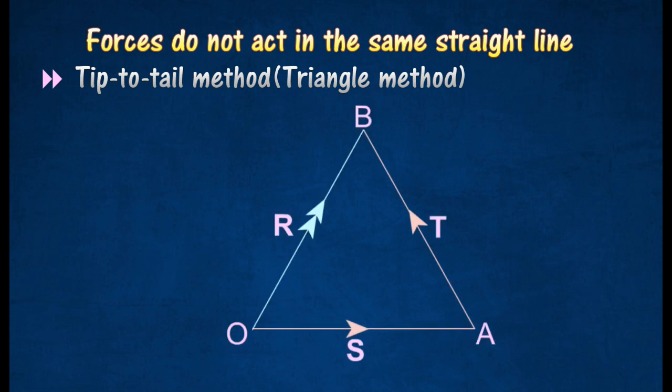The resultant is then represented by a line from the tail of the first force to the tip of the second force. In the figure shown, the resultant of the forces S and T is represented by R.